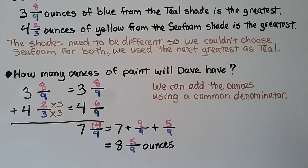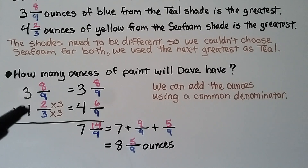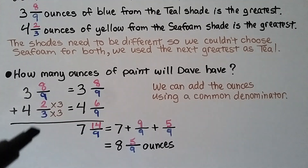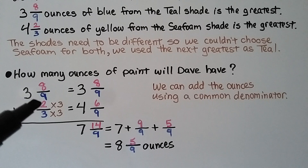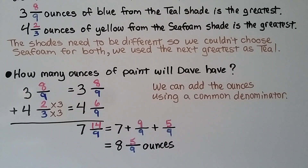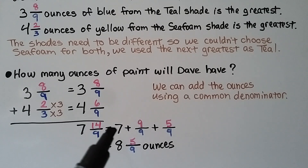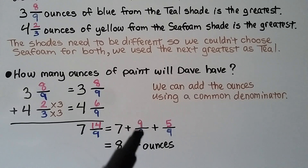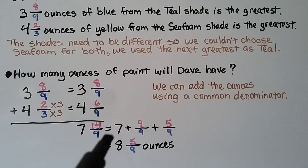How many ounces of paint will Dave have? We need to add 3 and 8 ninths plus 4 and 2 thirds. Since 9 is a multiple of 3, we use 9 as our common denominator. 3 times 3 is 9, so we multiply the numerator 2 by 3 to get 6. We add the numerators: 8 plus 6 is 14. We use the common denominator 9, and add the whole numbers: 3 plus 4 is 7. We have 7 and 14 ninths. 7 and 14 ninths equals 7 plus 9 ninths plus 5 ninths, which means we have 8 and 5 ninths ounces.